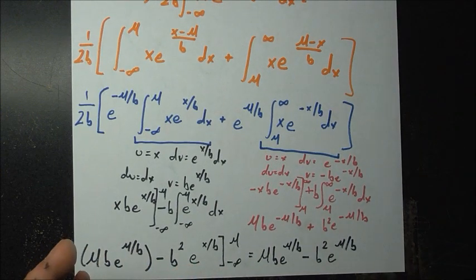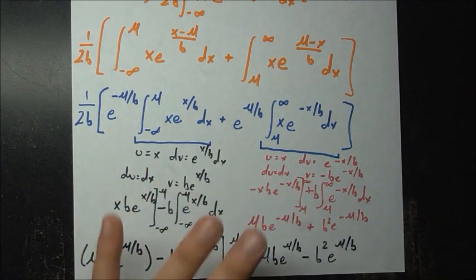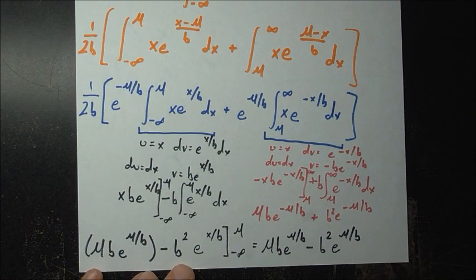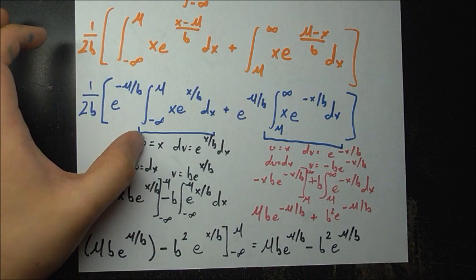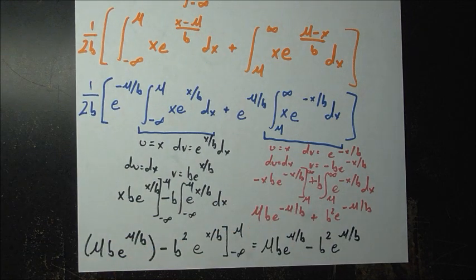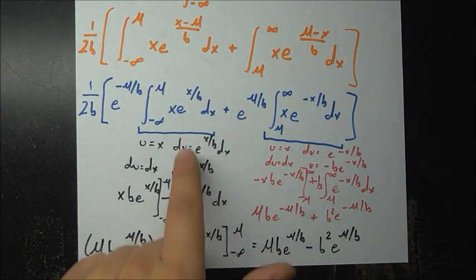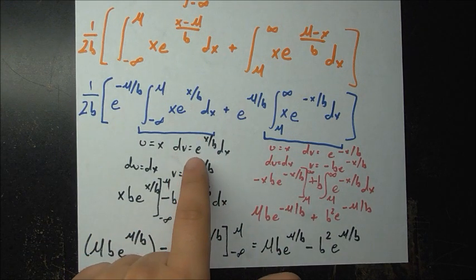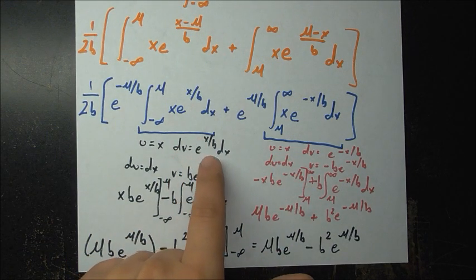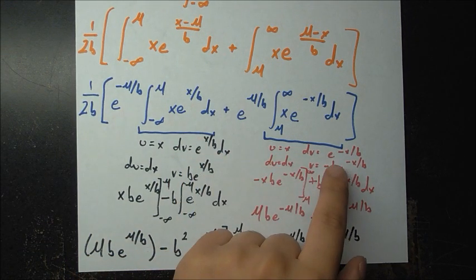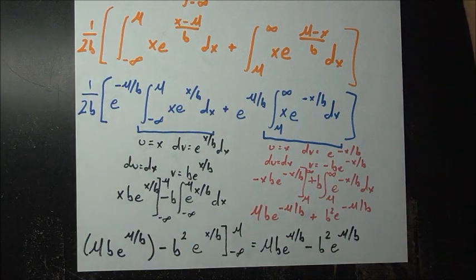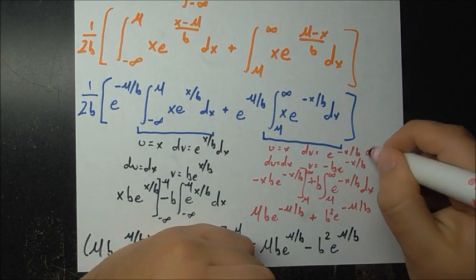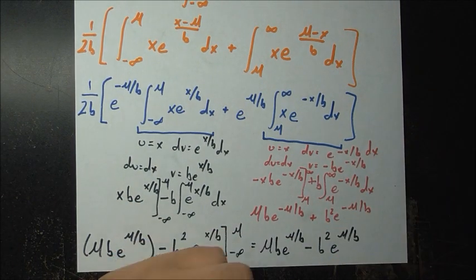The substitutions for integration by parts are u equals x in both cases, and dv equals e to the x over b dx for the first integral, and e to the minus x over b dx for the second.